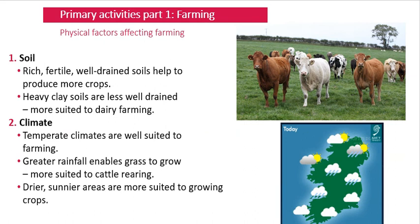Now, what physical factors affect farming? First is soil. Boggy soil is not good for farming — what you need are well-drained clay soils, which are often found in the east of Ireland. Rich, fertile, well-drained soils help produce more crops, while heavy clay soils are less well-drained and more suited to dairy farming.